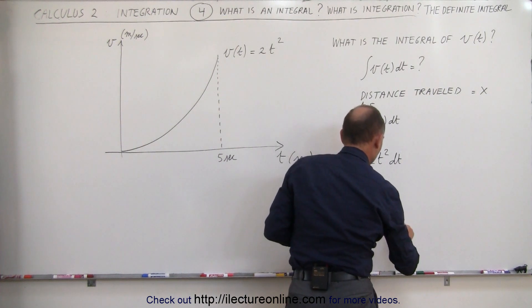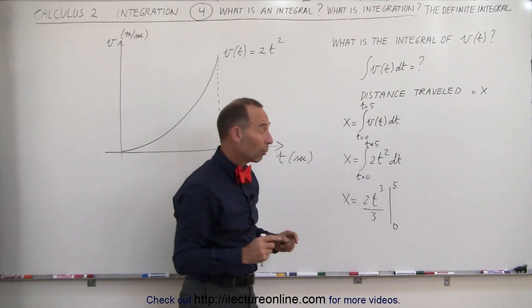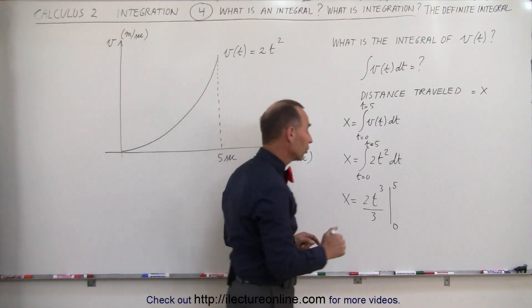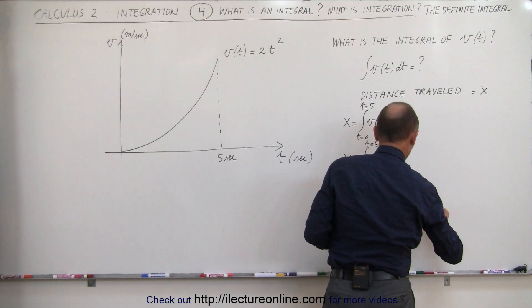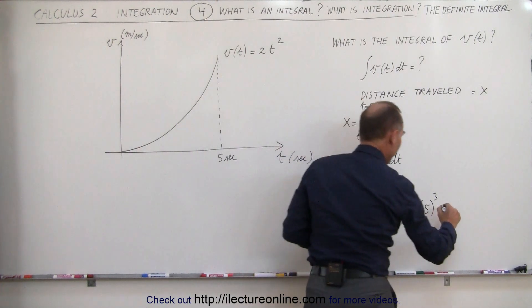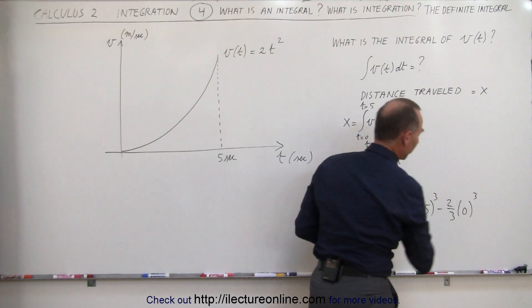And we're going to evaluate it from time equals zero to time equals 5 seconds, which means we're going to plug in the upper limit for t and subtract when we plug in the lower limit. That's going to look as follows. This is equal to 2 thirds times 5 cubed, when we plug in the upper limit, minus 2 thirds times 0 cubed, when we plug in the lower limit.